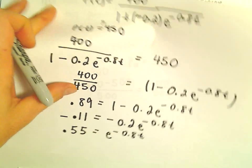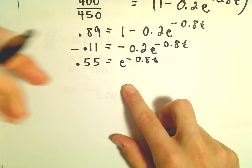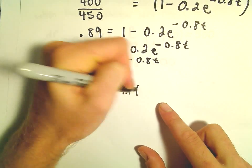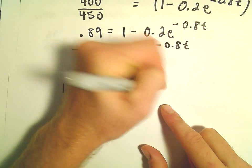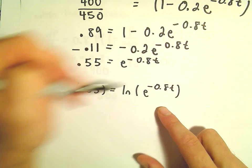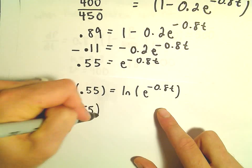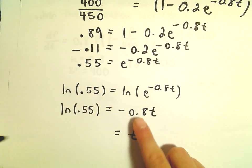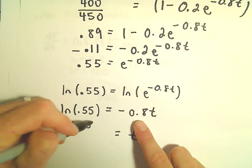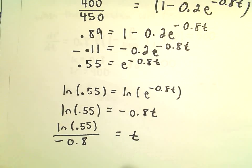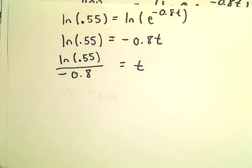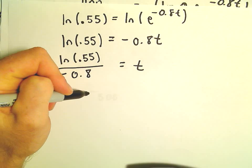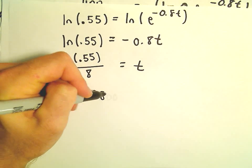So a couple more steps here. To get rid of the e, we'll just take the natural logarithm of both sides. So we'll have the natural logarithm of 0.55 equals the natural logarithm of e to the negative 0.8 times t. We'll be left with negative 0.8t on the right. Then we can divide, so we'll have the natural logarithm of 0.55 over negative 0.8. I'm getting roughly negative 0.598.